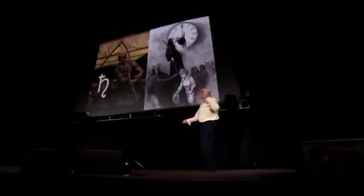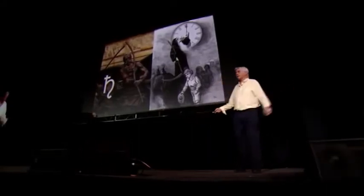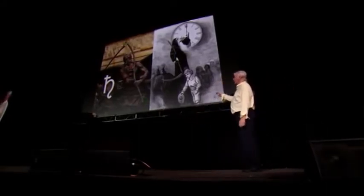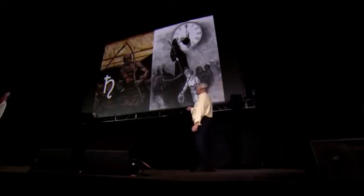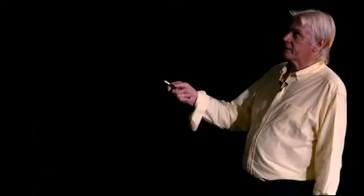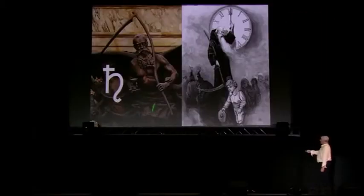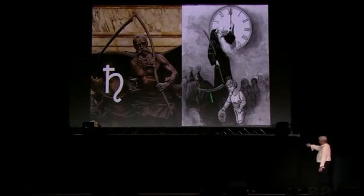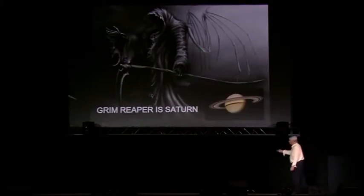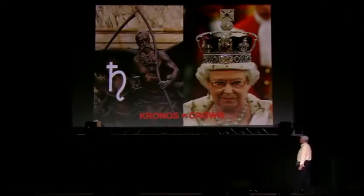The god of Saturn of the Greeks was called Kronos. Because he was the god Saturn, he was represented holding the scythe and depicted as the god of time. He had the white beard and became Old Father Time — that's Kronos. He also became the Grim Reaper, because Saturn is the planet of death. And Kronos became 'crown,' a symbol of the bloodlines.